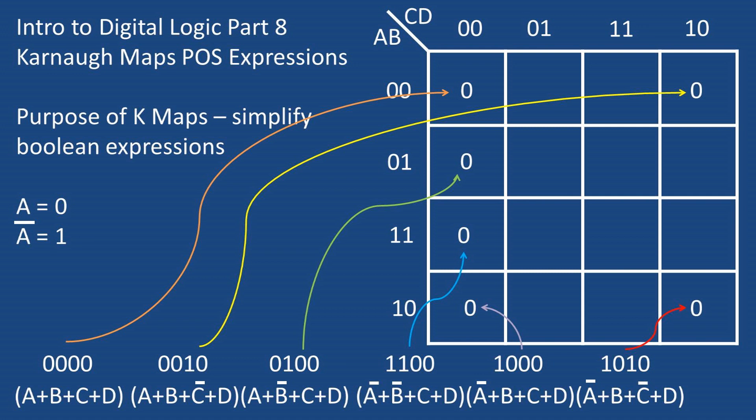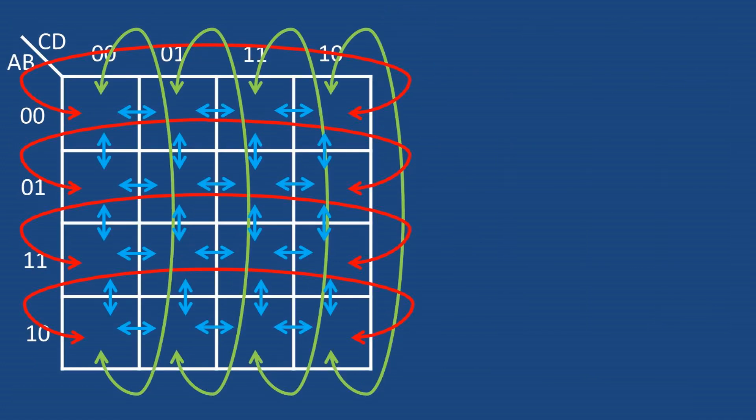Now you're probably thinking great, we have a Karnaugh map of the product of sums set of variables, now what? Well, in order to reduce this we must understand how to group variables.